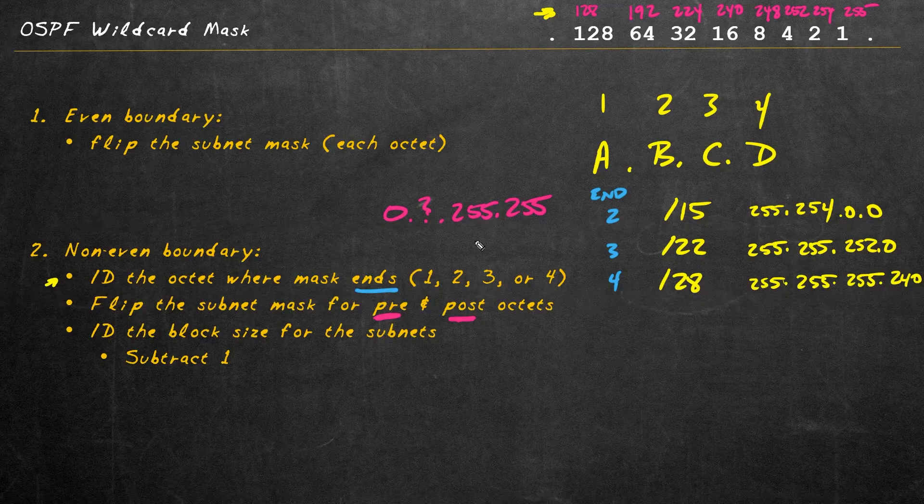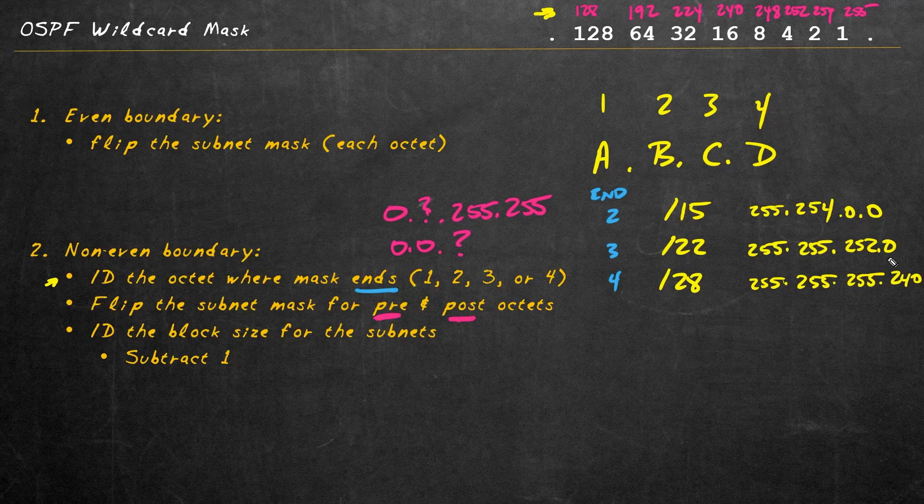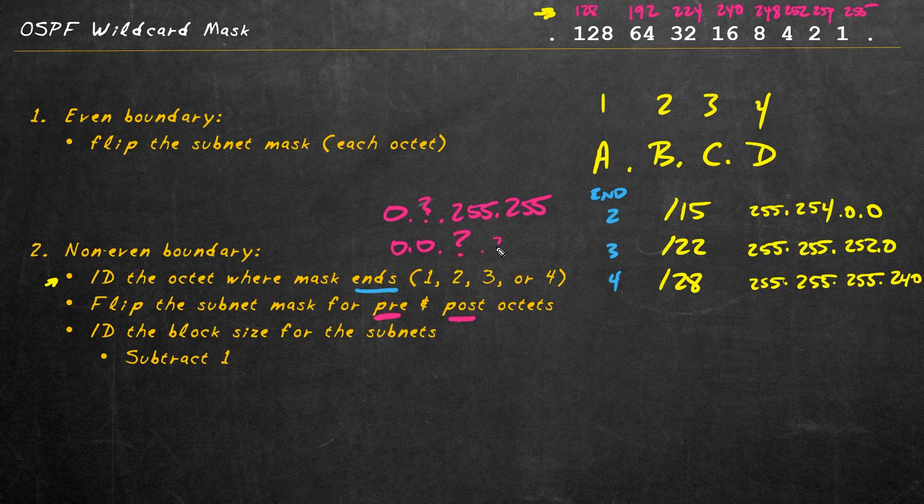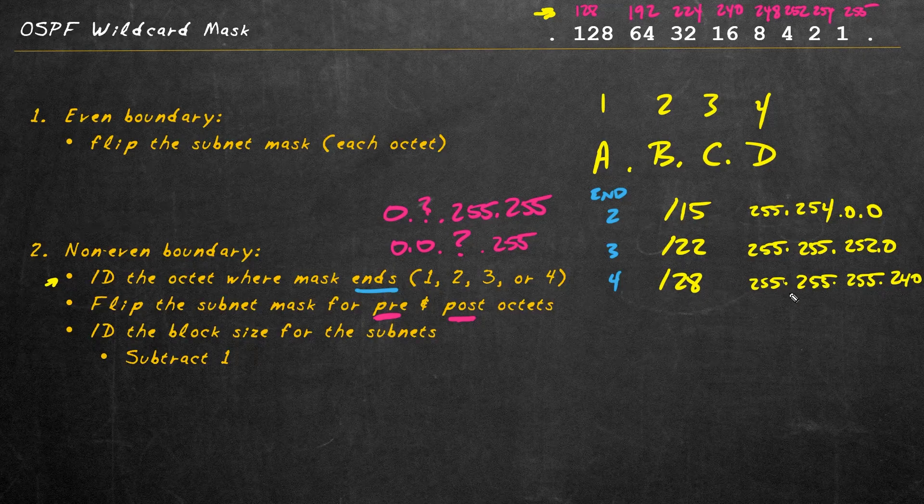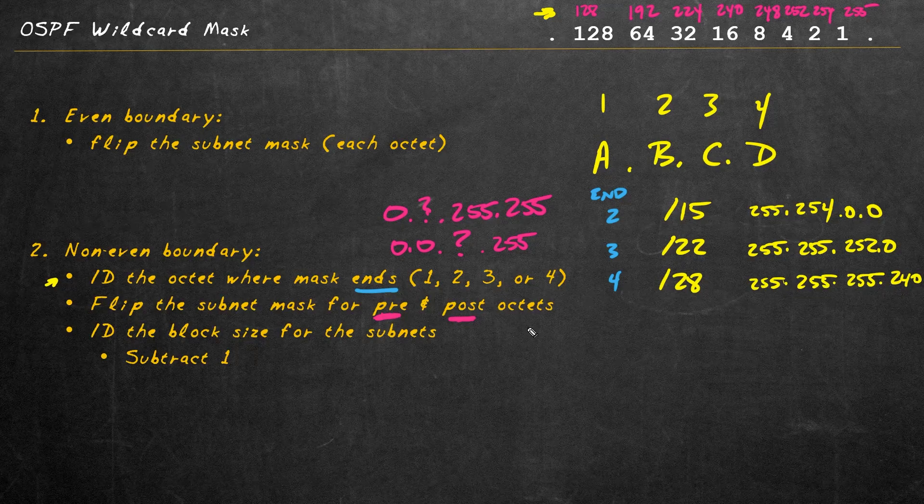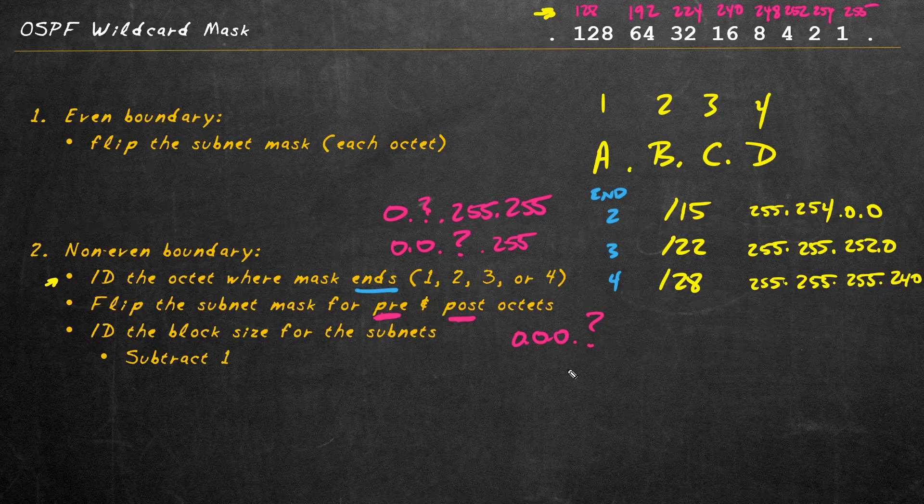In the case of the slash 22, we had 255.255, so that'd be a 0.0 and a question mark in that third octet. Then we're going to flip that final octet over to a 255. For the slash 28, because the dividing line is somewhere in the fourth octet, we're going to flip the first three octets, the pre stuff, which is now going to be 0.0.0. Then we need a value for that last octet to represent the wildcard bits for that last octet.